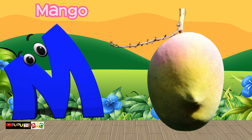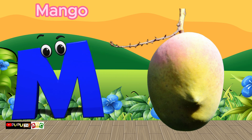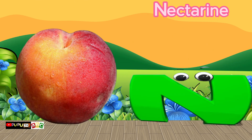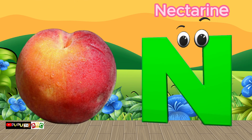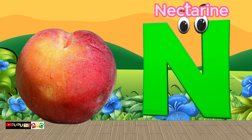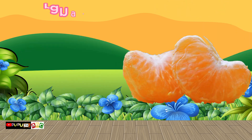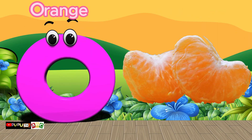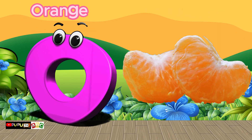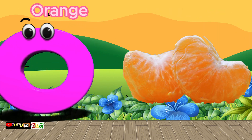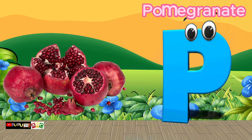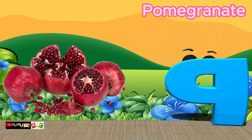M is for Mango, mango. N is for Nectarine, nectarine. O is for Orange. P is for Pomegranate.